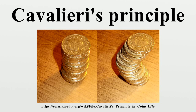Archimedes was able to find the volume of a sphere given the volumes of a cone and cylinder using a method resembling Cavalieri's principle. In the 5th century AD, Zhu Chongzhi and his son Zhu Gengzhi established a similar method to find a sphere's volume.